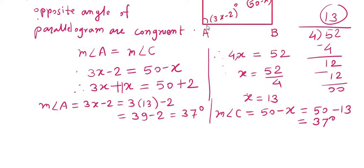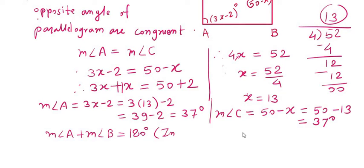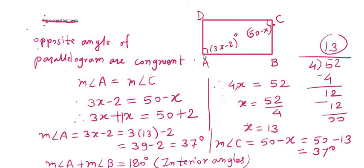Now we find angle B. A plus B is 180 degrees because they are interior angles — AD is parallel to BC and AB is a transversal. So measure of angle A plus measure of angle B equals 180 degrees. Therefore 37 plus angle B equals 180, giving angle B equals 180 minus 37, which is 143 degrees.